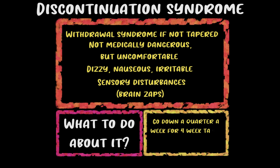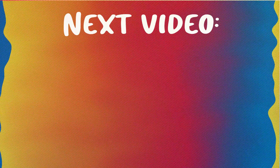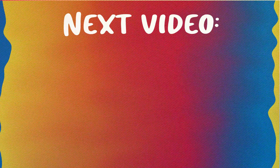A decent rule of thumb for stopping medications is reducing by 25% each week over a four-week taper, working with the patient at a pace that suits them. Despite the unpleasantness, withdrawal symptoms are not dangerous and nearly always disappear with time. That wraps up the more common SSRI side effects — this list was not exhaustive, and the next video will cover rarer but more dangerous side effects and population-specific side effects.